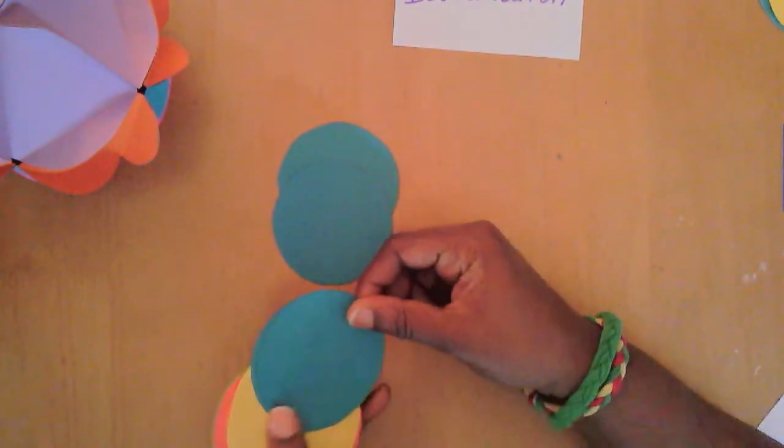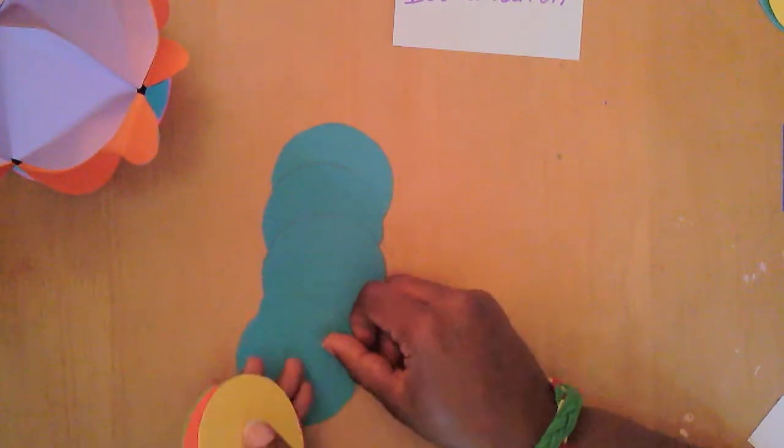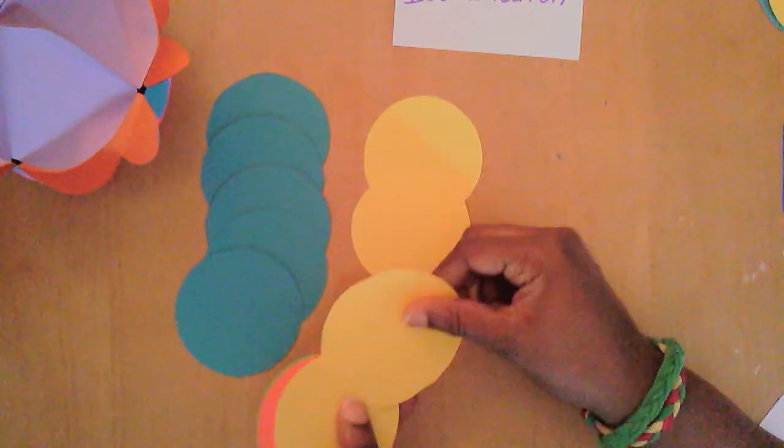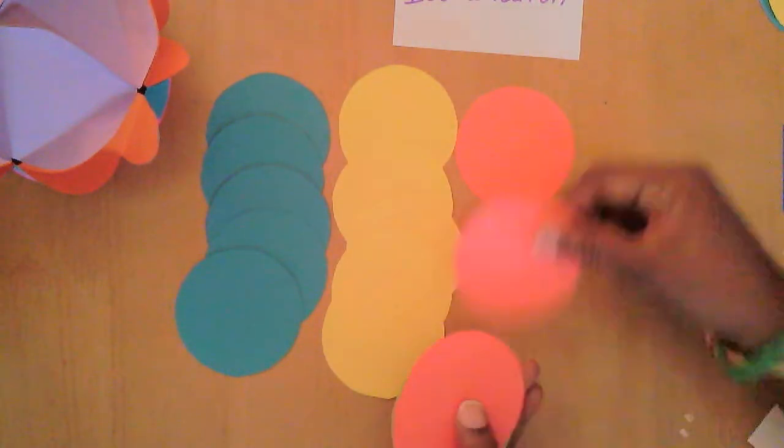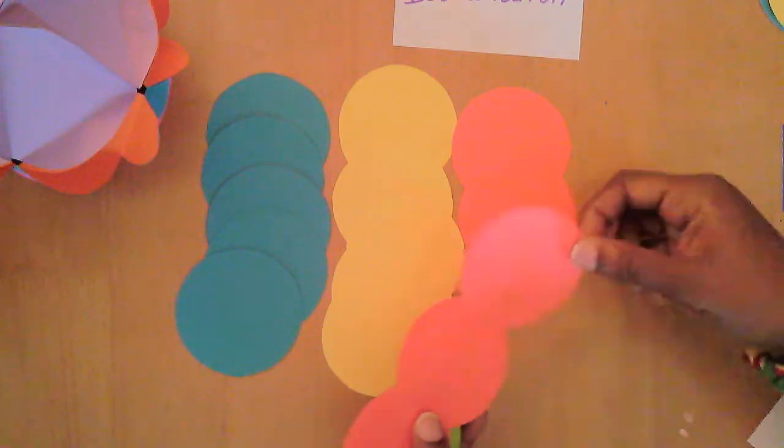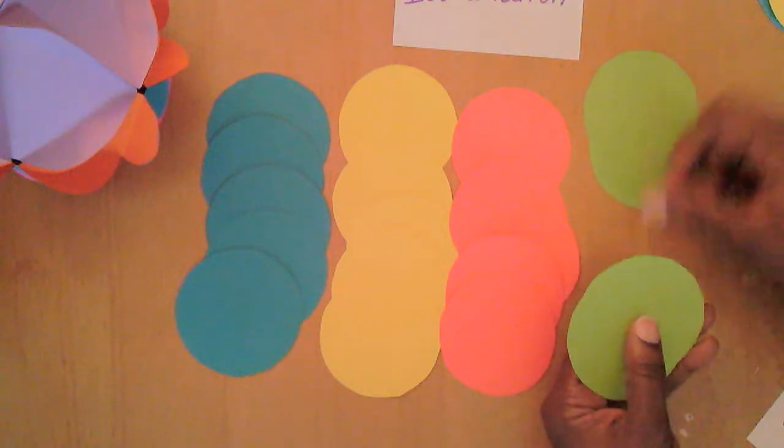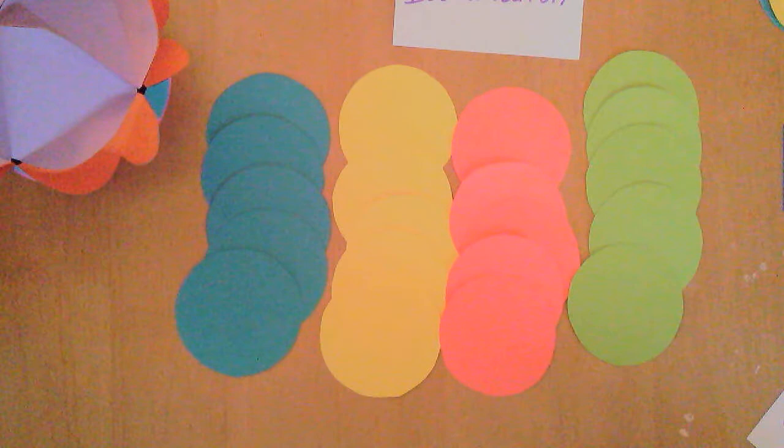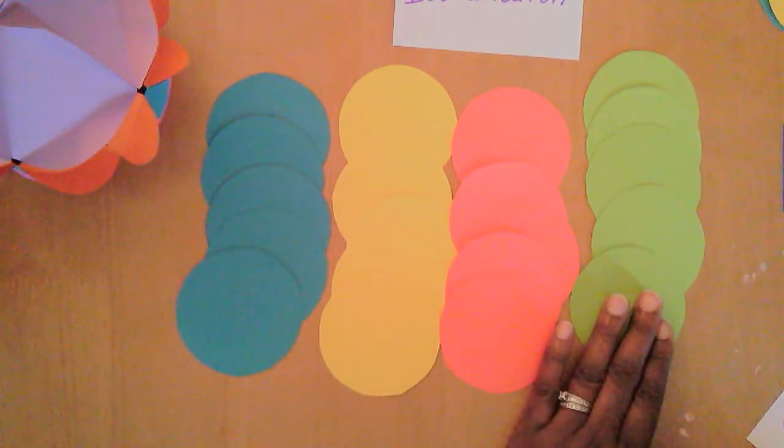So I cut out circles of four different colors. So I have 5, 10, 15, and 20. So when I count by 5 is 5, 10, 15, 20. There's 5 of each color.